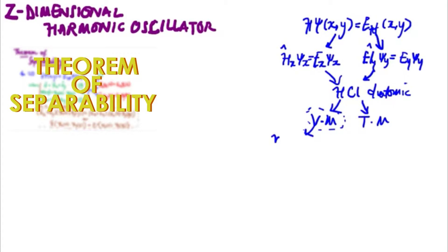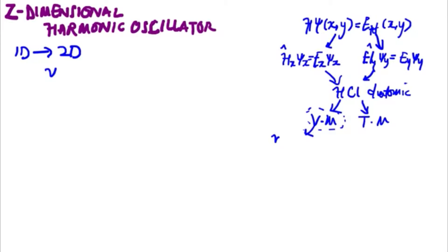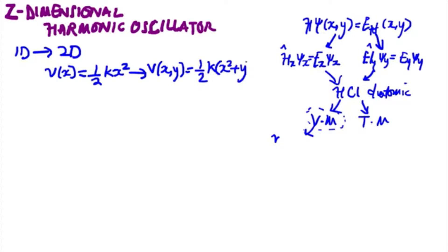Looking at the vibrational motion, we considered the potential energies and kinetic energies in diatomic molecules. This leads us to pause and dive into how we go from the one-dimensional harmonic oscillator to the two-dimensional harmonic oscillator. For the potential energy on x we have one-half multiplied by the spring constant multiplied by x squared. Going into two dimensions, we add the y coordinates, resulting in the sum of the squares.